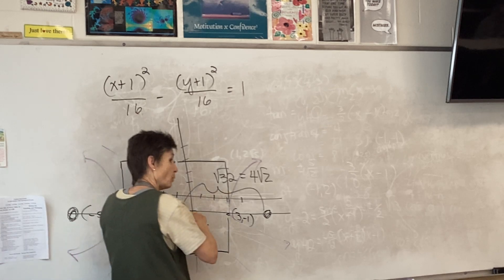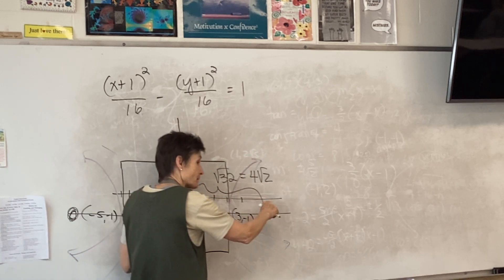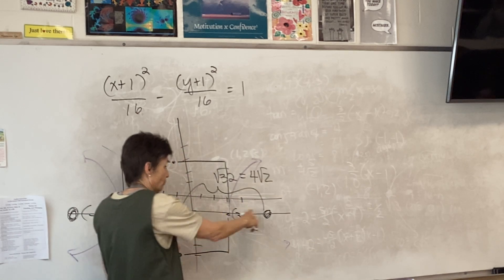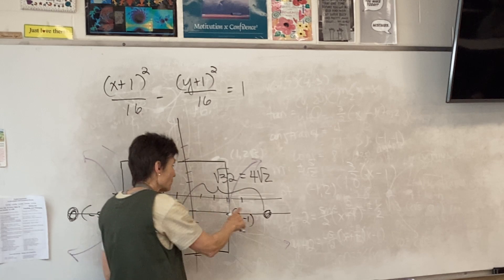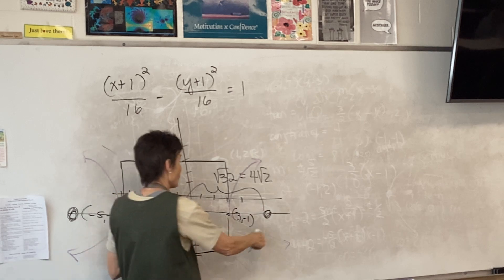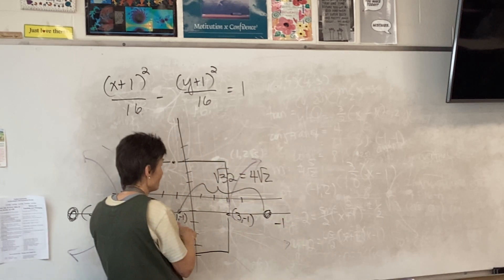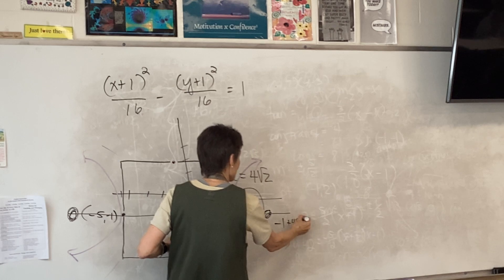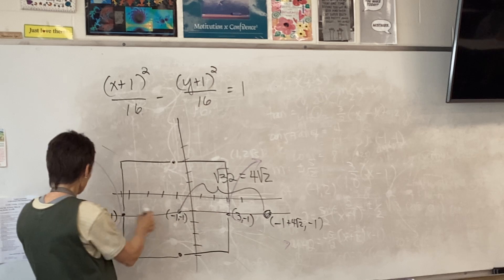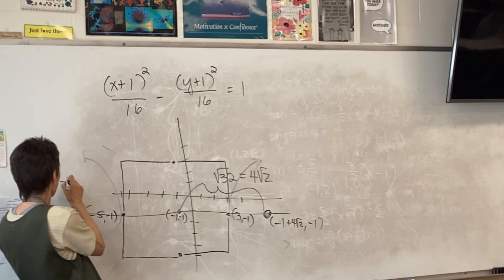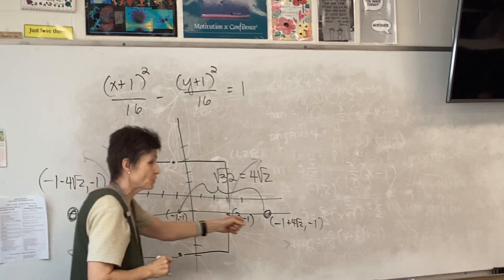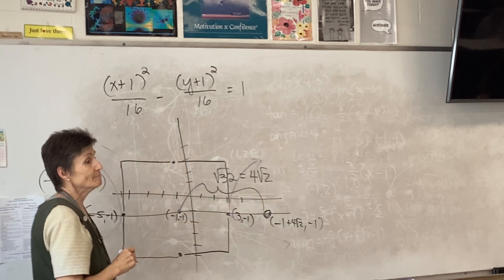Since we're going left and right this time, from the center — if I'm going right, which is changing, x or y? X. So I start with my negative one, the original x, and add 4 root 2. My y didn't change. Then I start with my original x and subtract 4 root 2, and my y didn't change.